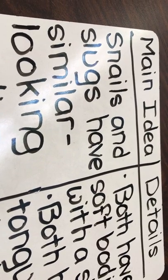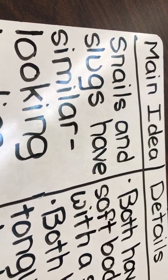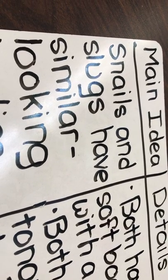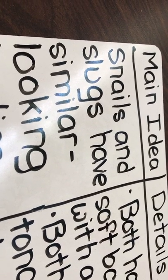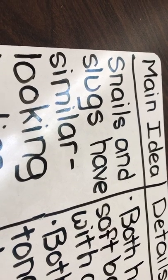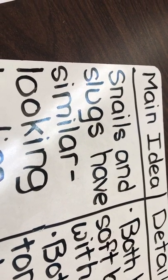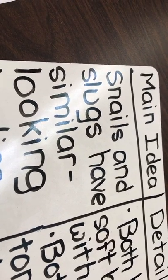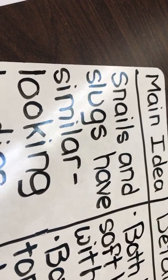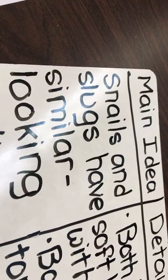As I read the section snail and slug bodies, most of the sentences describe snail and slug bodies. They both have soft bodies covered by a shell. They both have similar tongues and tentacles too. Based on what I read, I think the main idea of the section is snails and slugs have similar looking bodies.